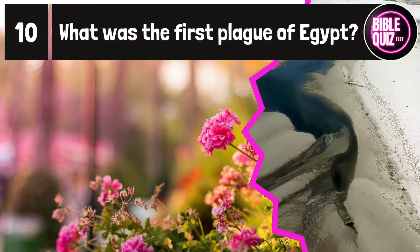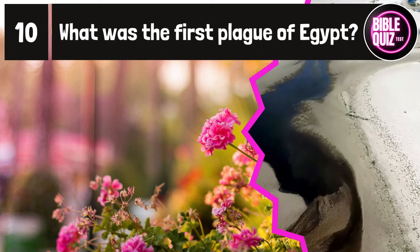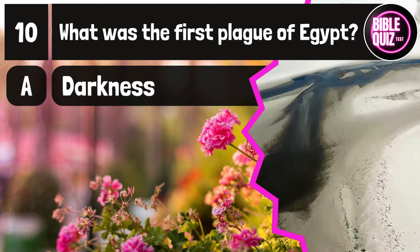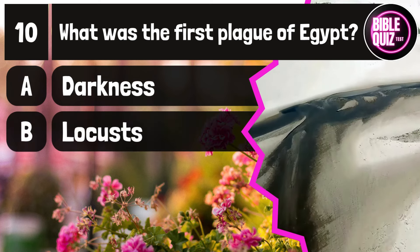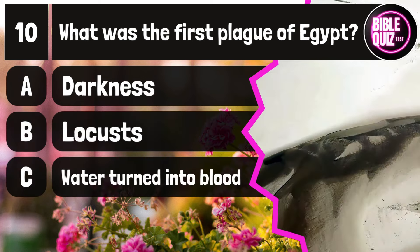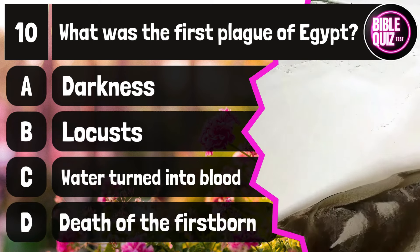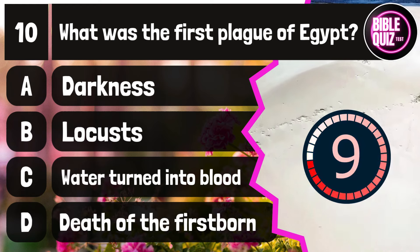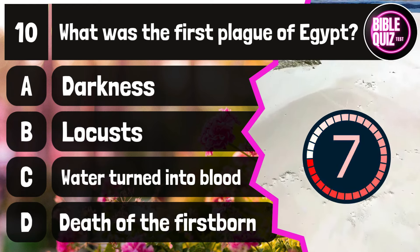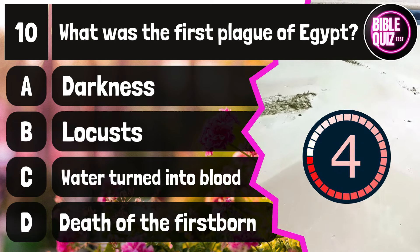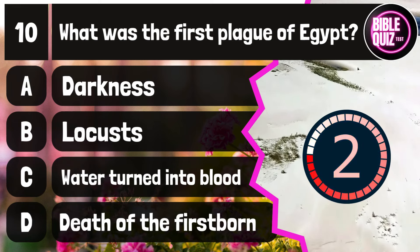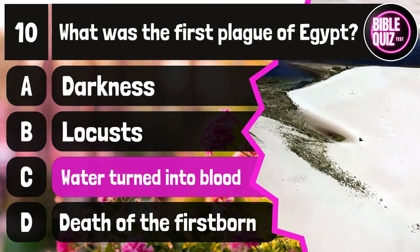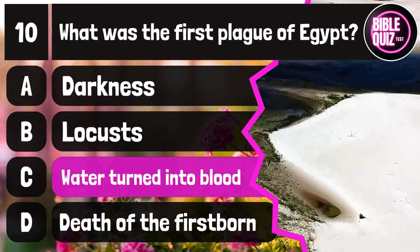Question number 10. What was the first plague of Egypt? Option A: Darkness. Option B: Locusts. Option C: Water turned into blood. Option D: Death of the firstborn. Time to think. The answer is option C: Water turned into blood.